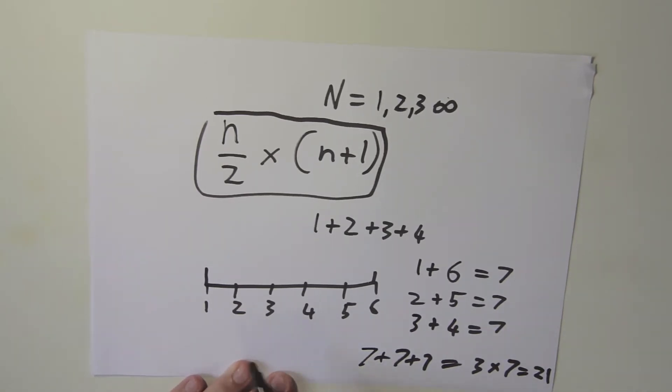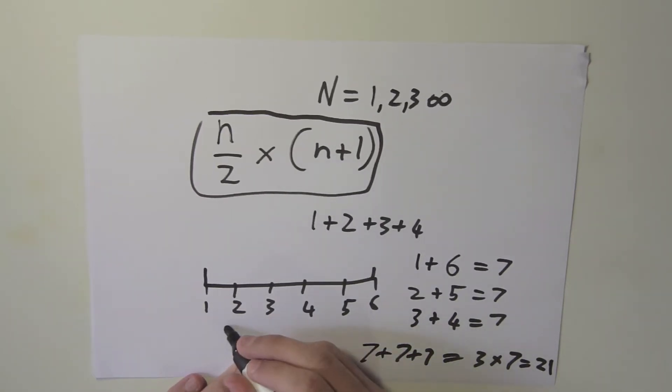Let's just make sure that this actually checks out. So 1 plus 2 is 3, and then plus 3 is 6, 10, 15, 21. So as you can see, up to 6, it does check out.